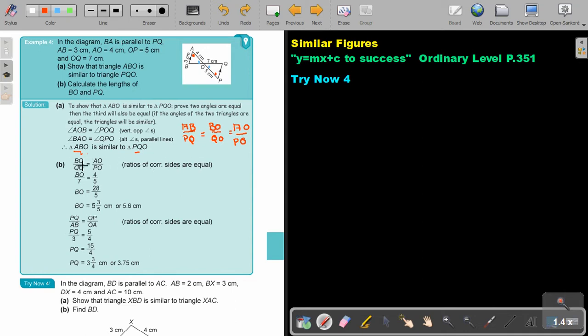So this is where the ratios are equal. Now I look, what do I have? I have AB, that's 3. I have PQ, yes, that's 5. Do I have BO? No. Do I have QO? Yes, that's 7. And I'm looking for BO. So you can write this down.